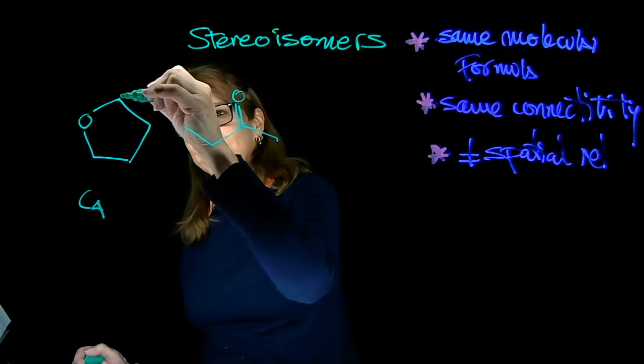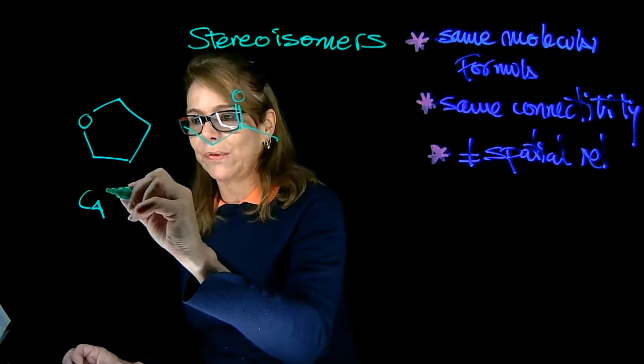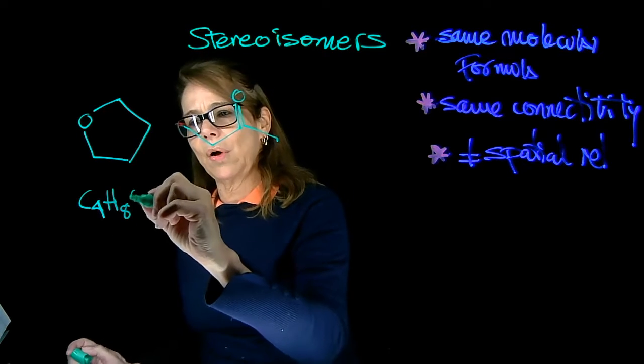And notice here I have CH2, CH2, CH2, CH2. So 2H is in each of the carbons. So that's 8. And then O.